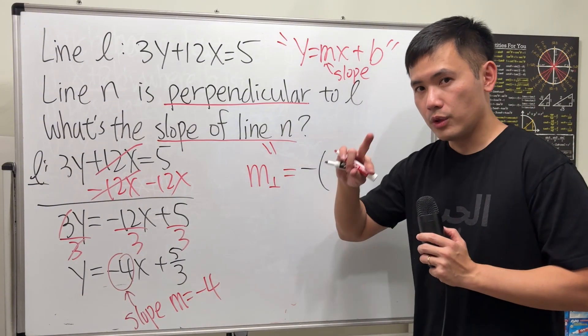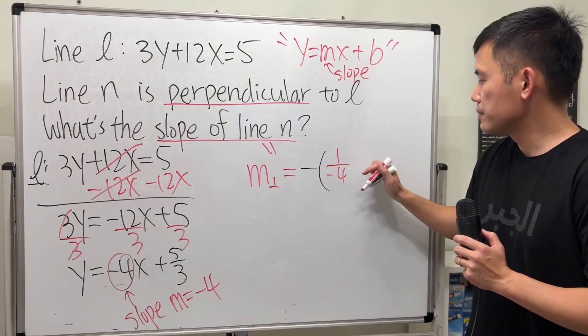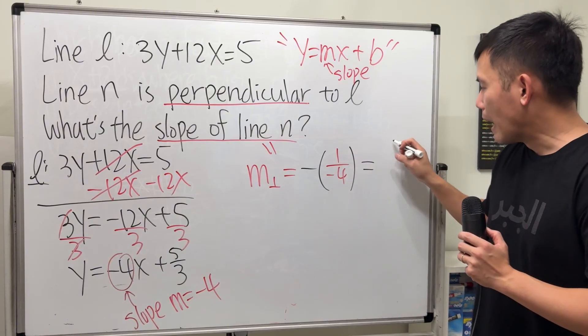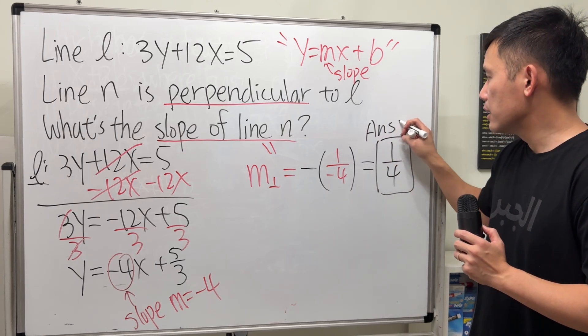This is negative 4. So, we do the reciprocal, which is 1 over negative 4. Work that out. It is positive 1 over 4. So, and this right here is the answer.